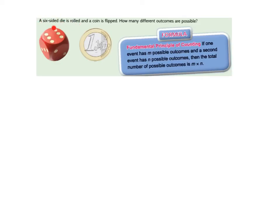Here we have a six-sided dice or die, and it's rolled. We also have a coin flipped, and we are asked how many different outcomes are possible. The key word here is how many. So we're not asked to list the different outcomes, we're asked how many results would there be.